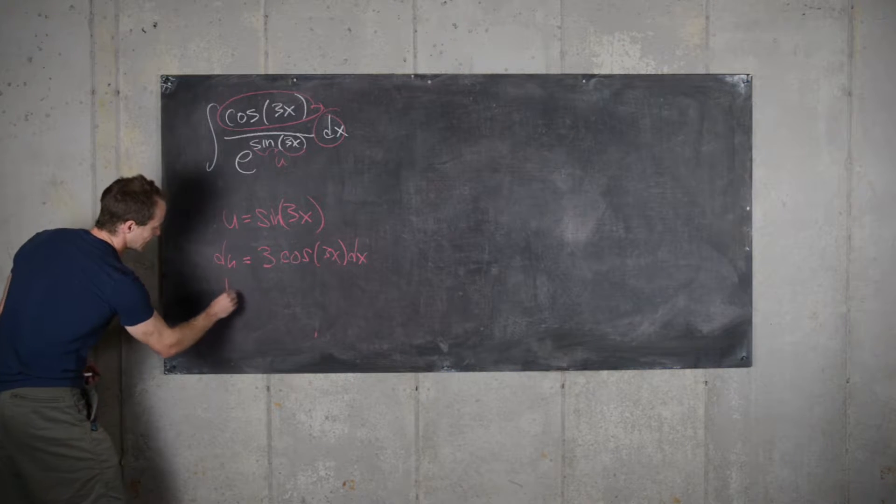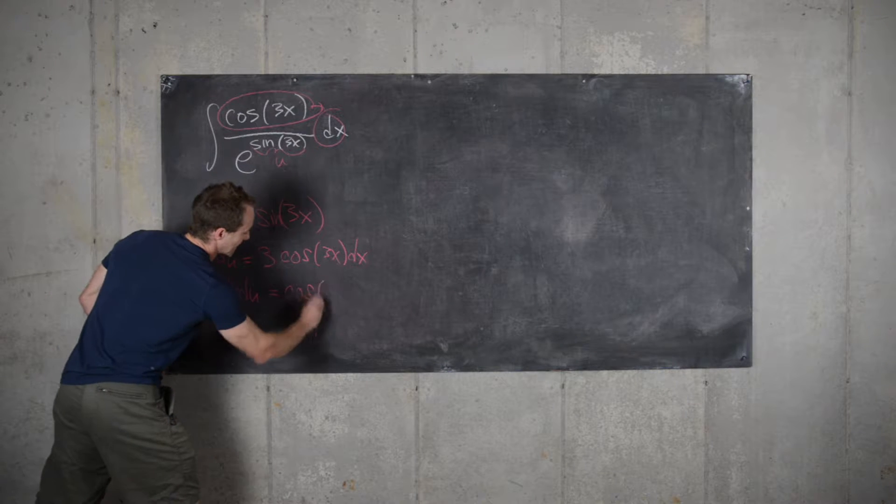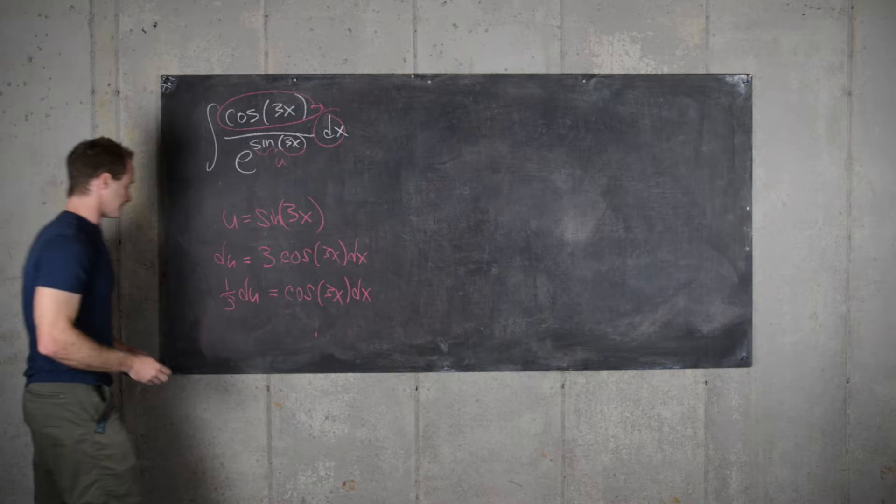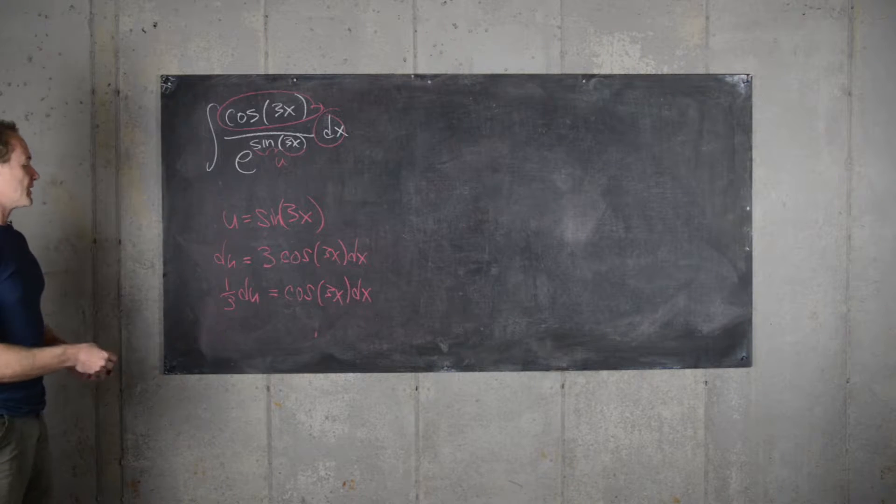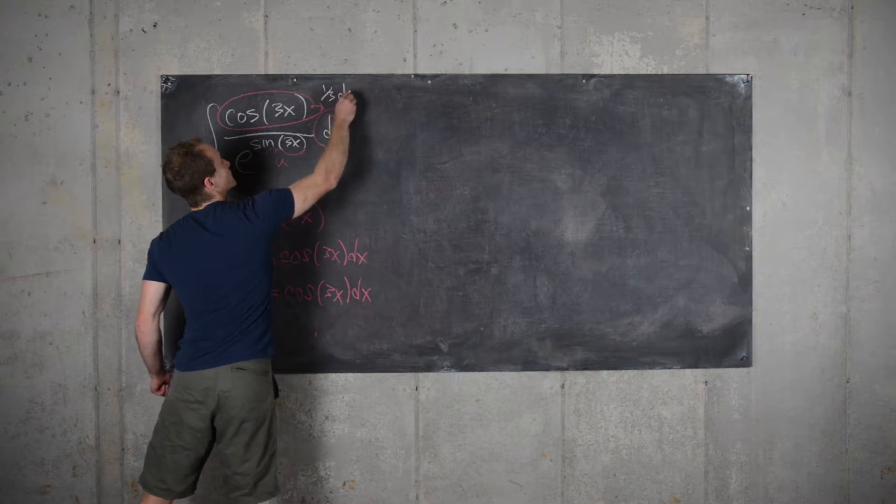So we can solve down here and we get 1 third du equals cosine of 3x dx. And so we can replace cosine of 3x dx with 1 third du. So here we get this as 1 third du.